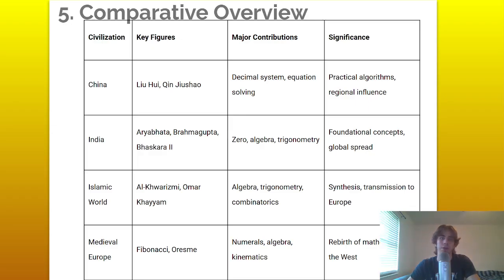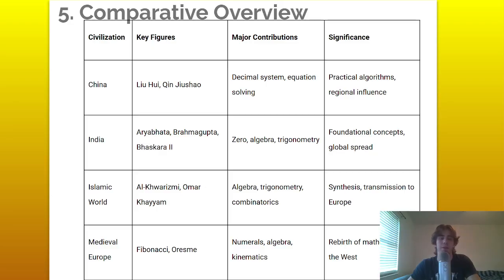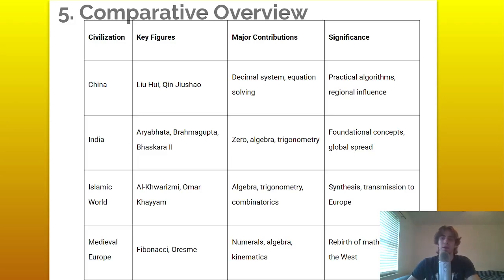Here is a table overview covering civilization, key figures, major contributions, and significance. China's significance lies in practical algorithms and regional influence; India in foundational concepts and global spread; the Islamic world in synthesis and transmission to Europe; and medieval Europe in the rebirth of mathematics in the West. Thank you for listening, and have a good day.